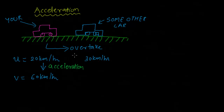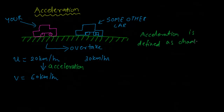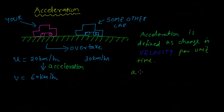This is how a normal human being would understand acceleration. But when we talk about physics, we need to be far more precise. Acceleration is defined as change in velocity per unit time. Mathematically, we represent it as: a = change in velocity upon time.